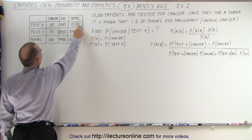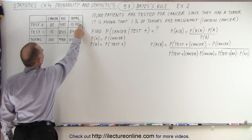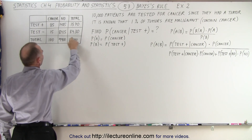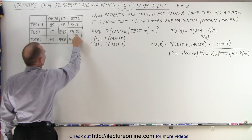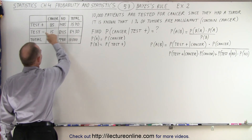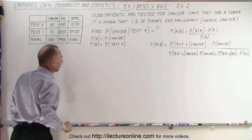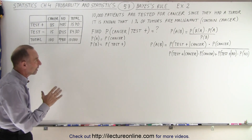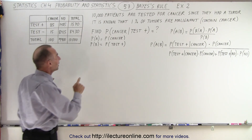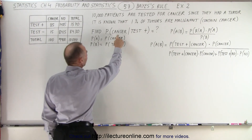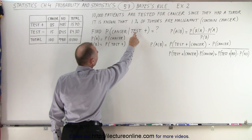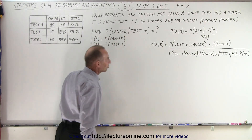Of all the patients, a total of 1,570 will test positive and 8,430 will test negative. Based upon that, we're trying to find the probability that the patient will have cancer given that they test positive.